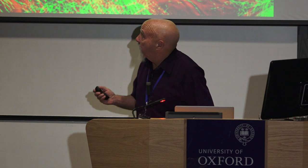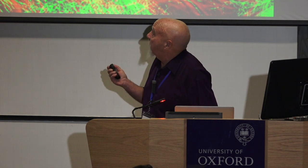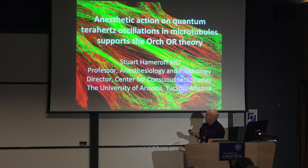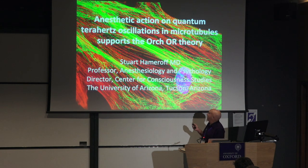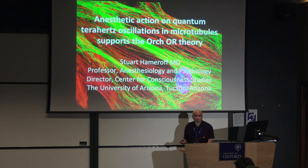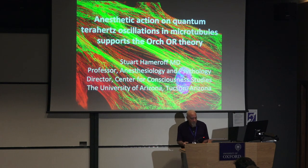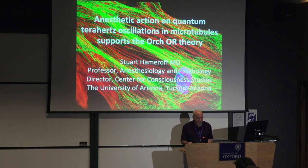What you see in the background is a neuron immunofluorescence stained, so you see the surface membrane, the nucleus, and in the red and yellow you see cytoskeleton inside the neuron. The yellow being structures called microtubules that I'll be talking about a bit more.